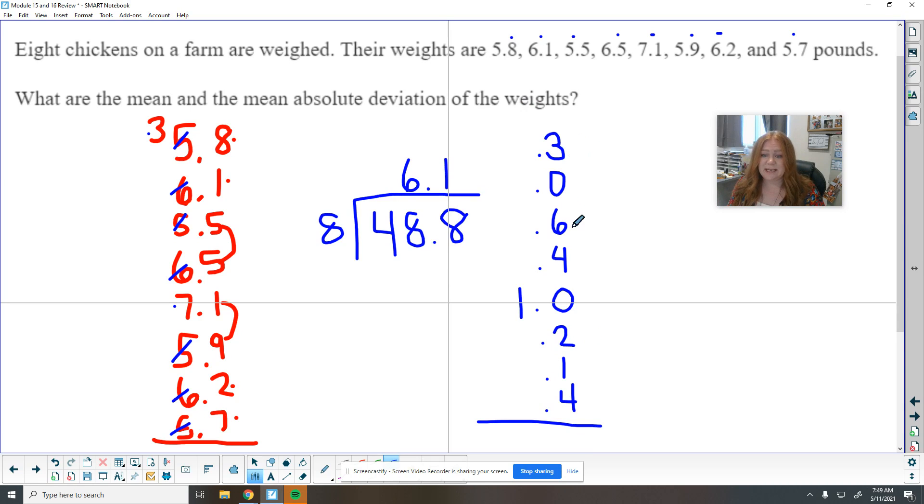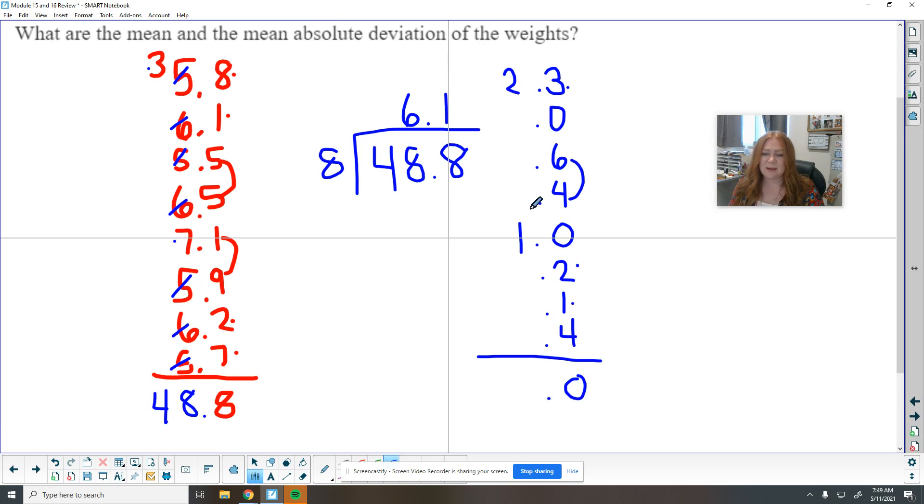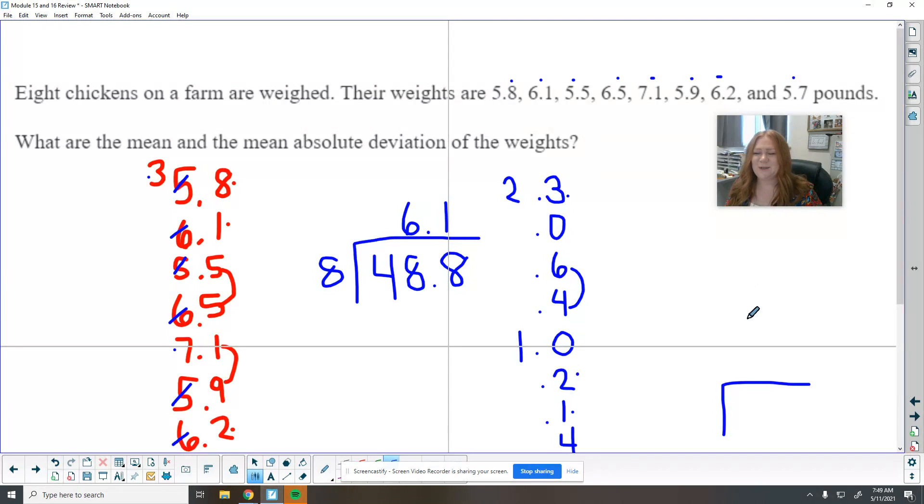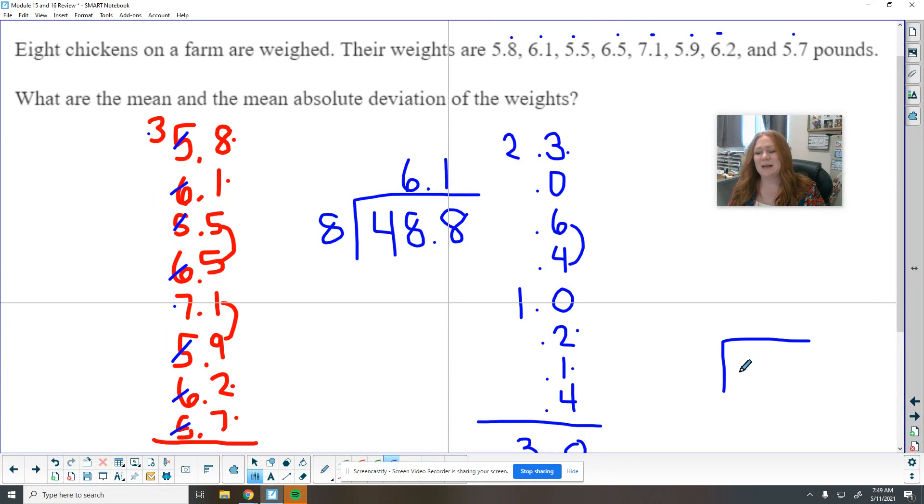So here is 10, 13, 14, 15, 16 plus 4 is 20. My decimal comes straight down. 2 plus 1 is 3. So this mean absolute deviation. Oh, I did not divide. That can't be right. They're all pretty close to each other. They're not even 3 pounds apart. So I've got to take that and divide by 8 again here.